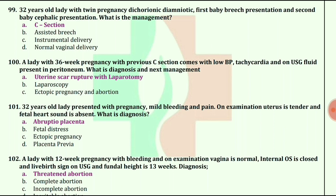A lady with 36th week pregnancy with previous C-section comes with low BP, tachycardia, and on ultrasound, fluid present in peritoneum. What is the diagnosis and next management? The answer is uterine scar rupture with laparotomy.